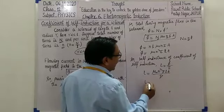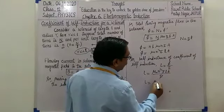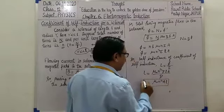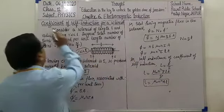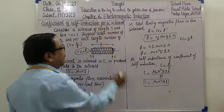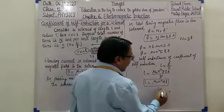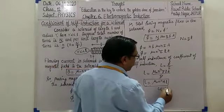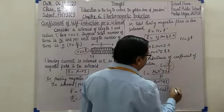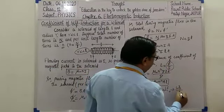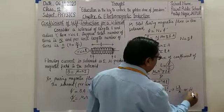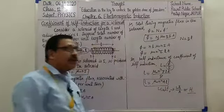Therefore, self-inductance or coefficient of self-induction: L = μ₀n²AL. This is the coefficient of self-induction or self-inductance of a solenoid. The unit of L can also be expressed as weber per ampere, or henry (H).